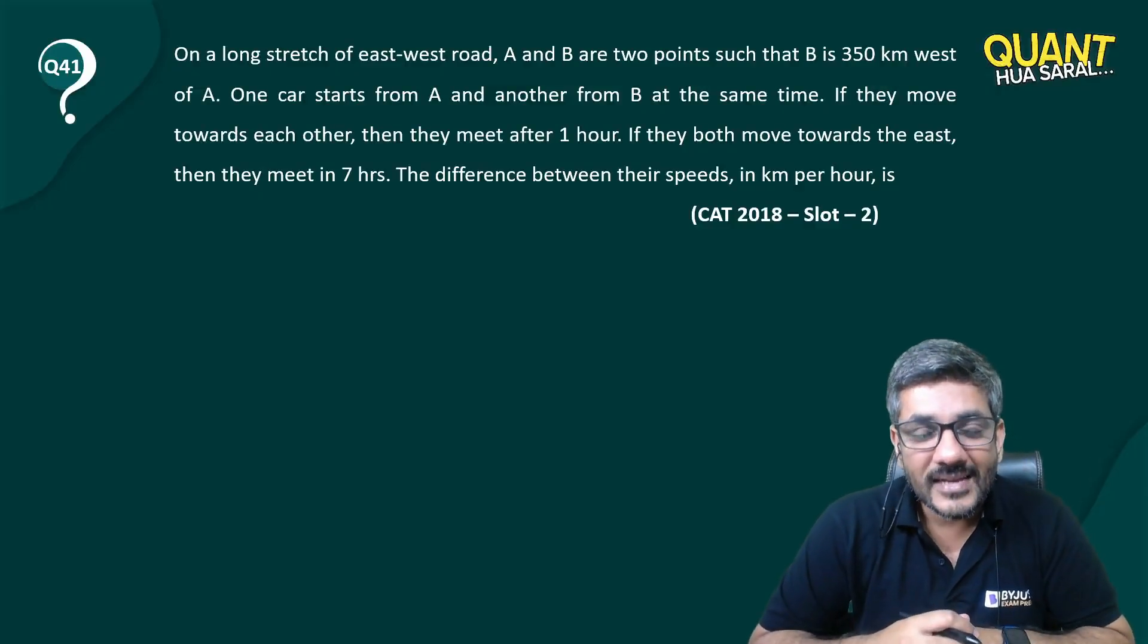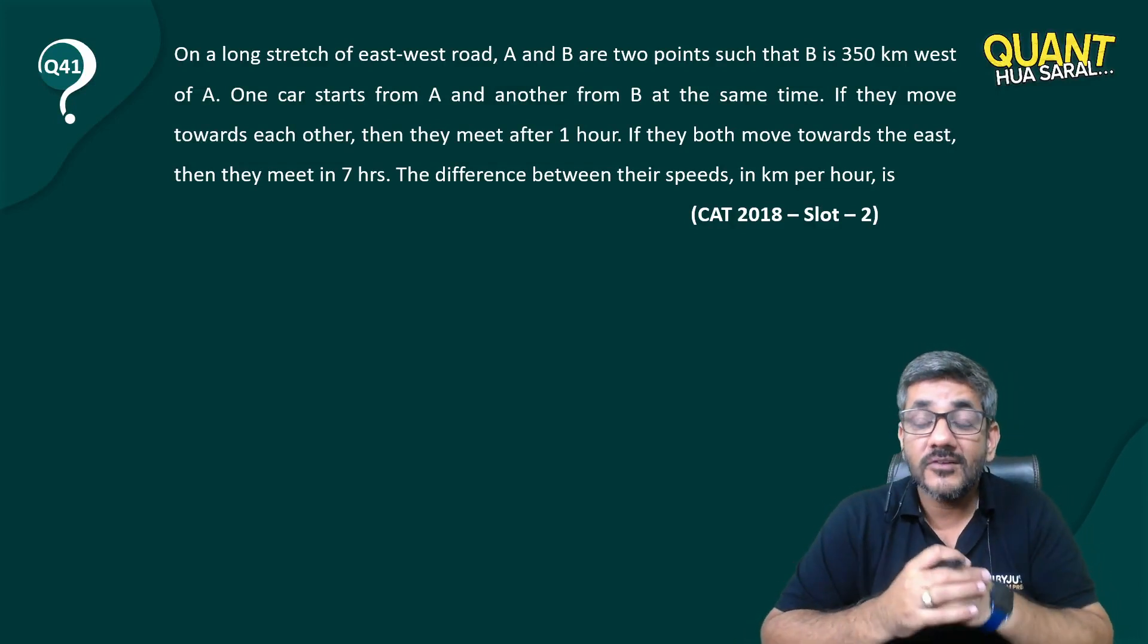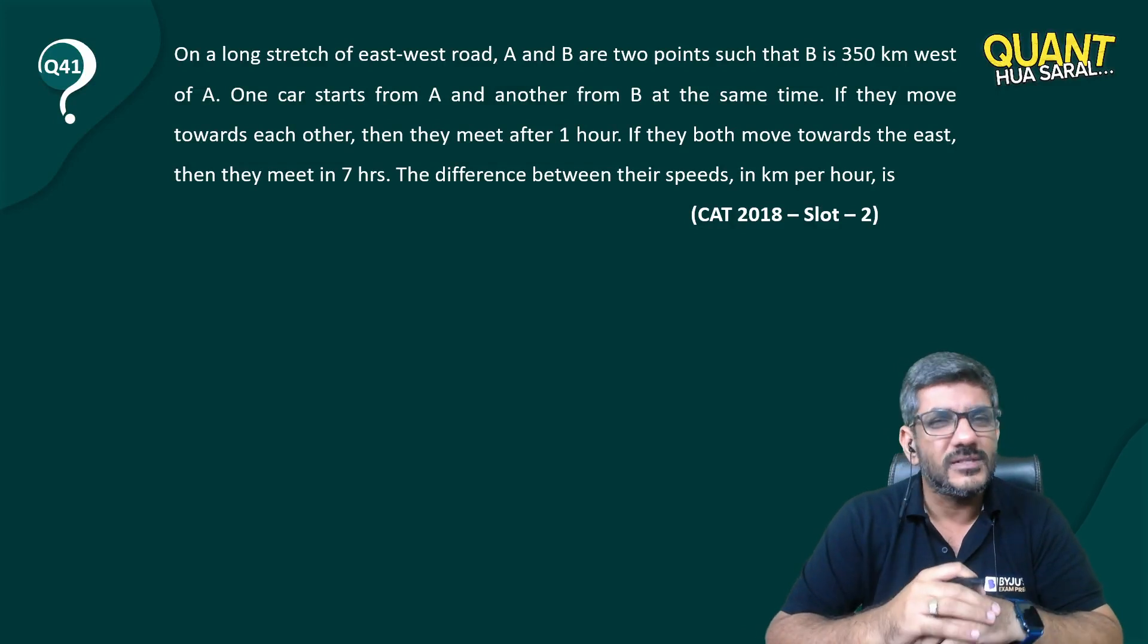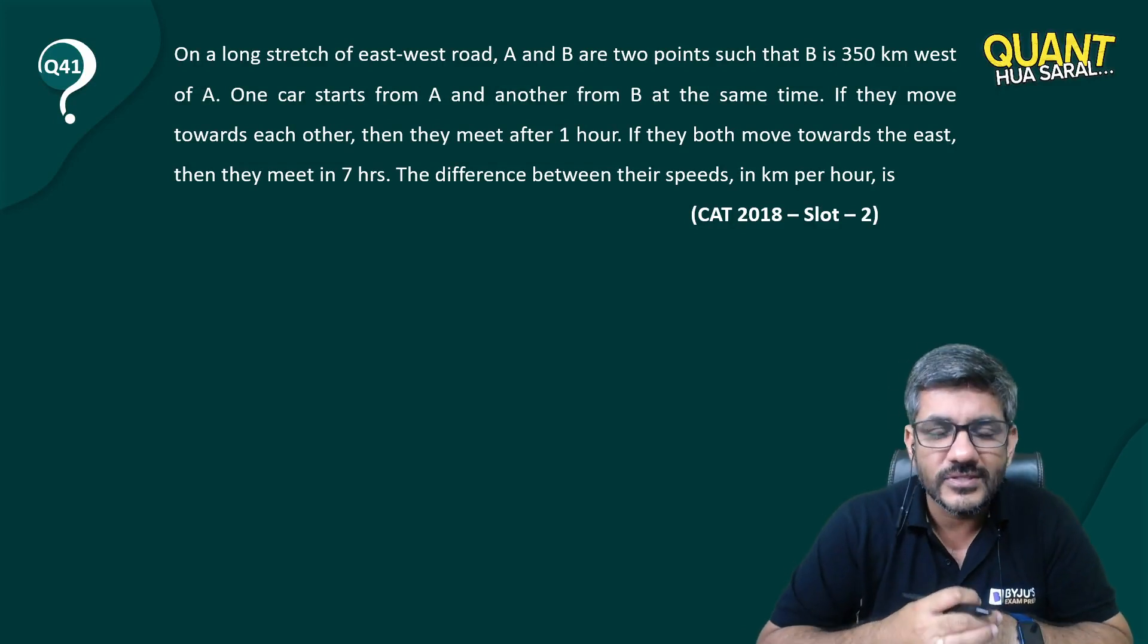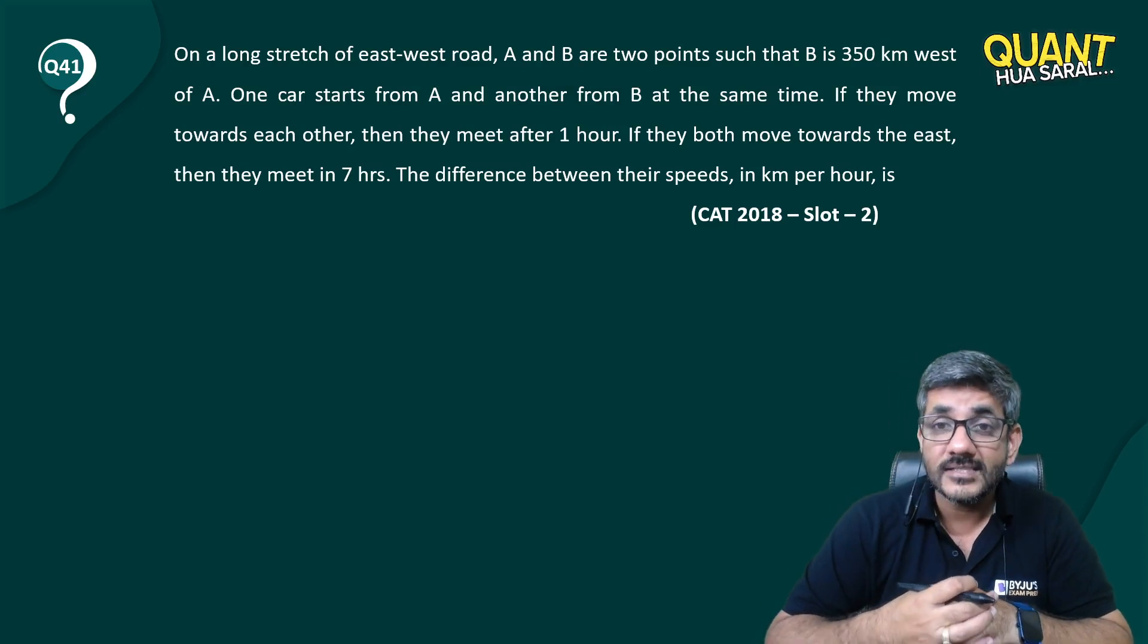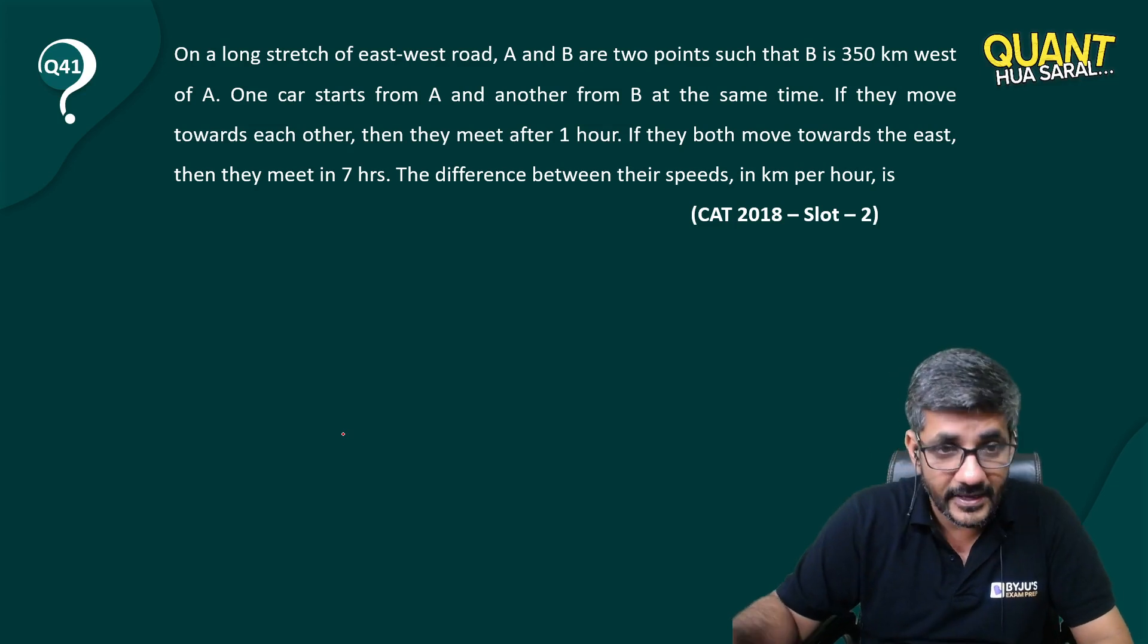Hi there, welcome back to question number 41. We have a question from 2018 slot 2 again, but there is something very peculiar that you would see. On a long stretch of east-west road, A and B are two points such that B is 350 kilometers west of A.